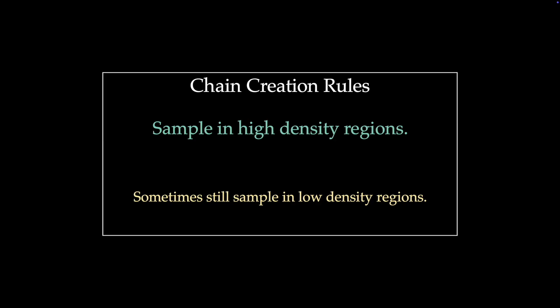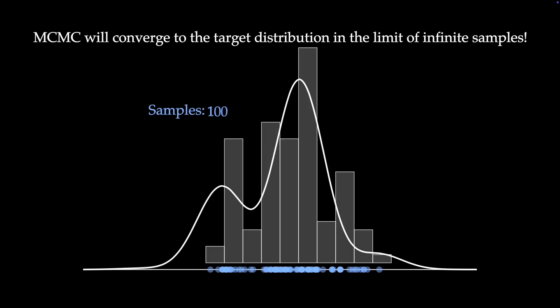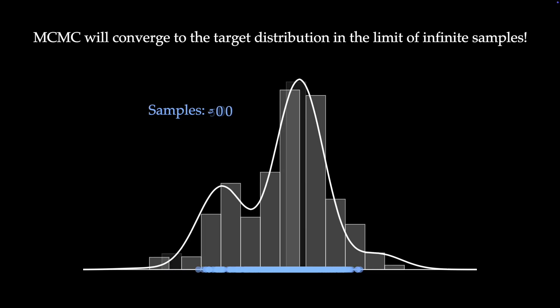Well, this is in no way a mathematical proof that this works. You can consult a stats textbook for that one. It turns out that this algorithm will converge to the target distribution in the limit of infinite samples. And in general, the more samples we produce, the closer we get to our target distribution.